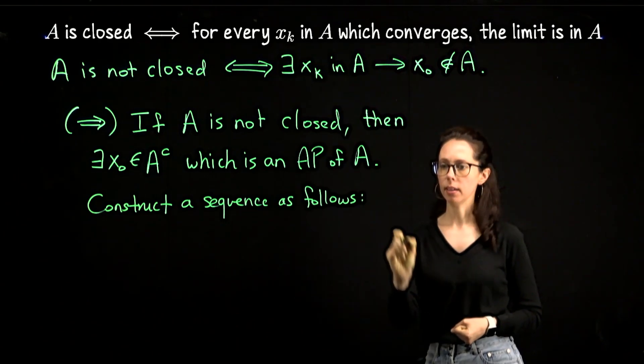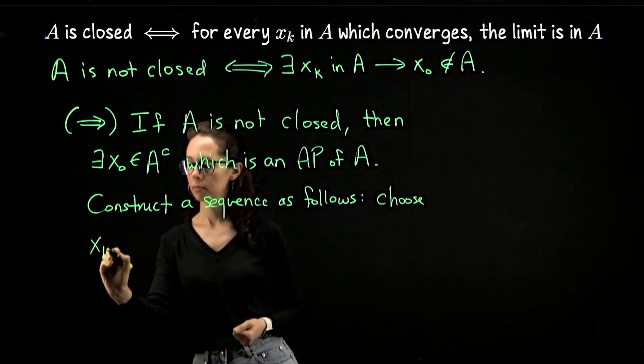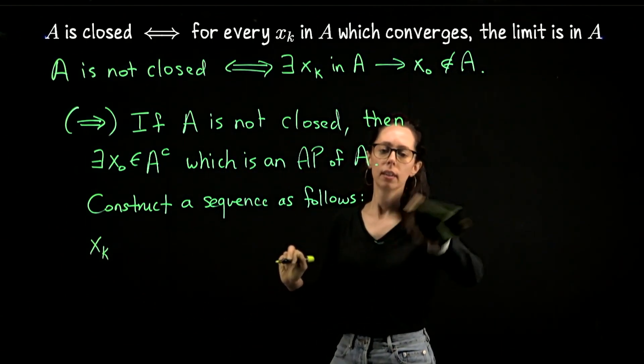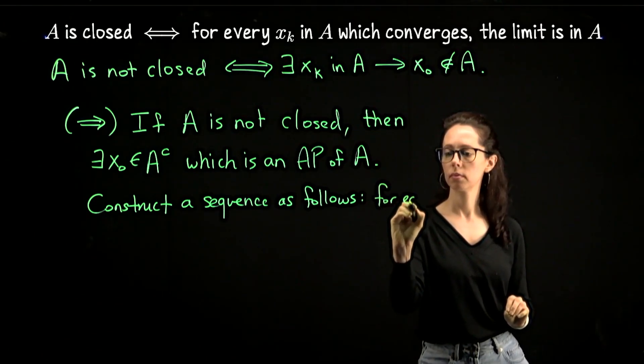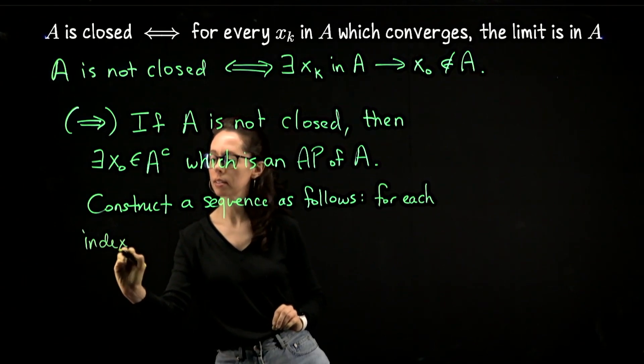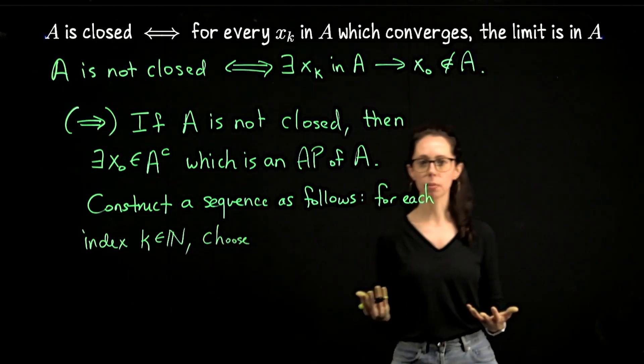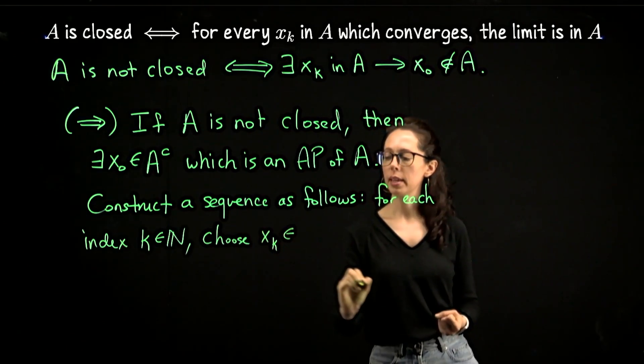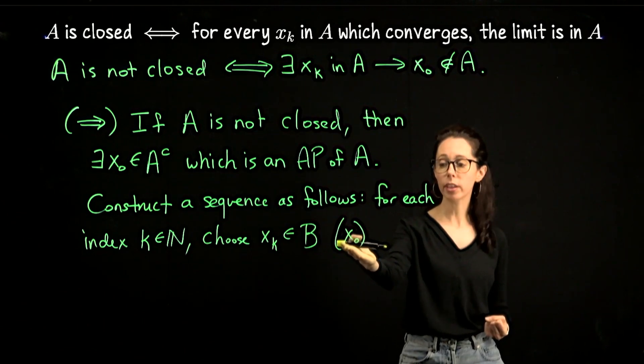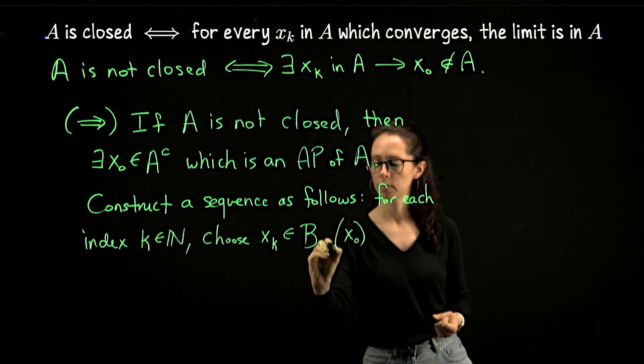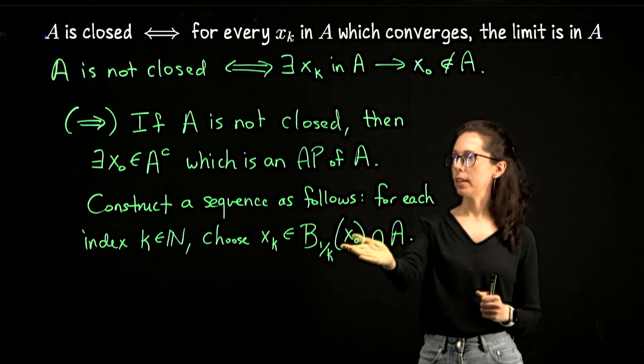I think I can do this in just one or two lines. Construct a sequence as follows. For each index k, choose x_k to be an element in the intersection of the epsilon neighborhood around the accumulation point of radius one over k intersect A. Okay, let's pause here for a moment. x₀ is the accumulation point. That's what we're hoping to converge to.